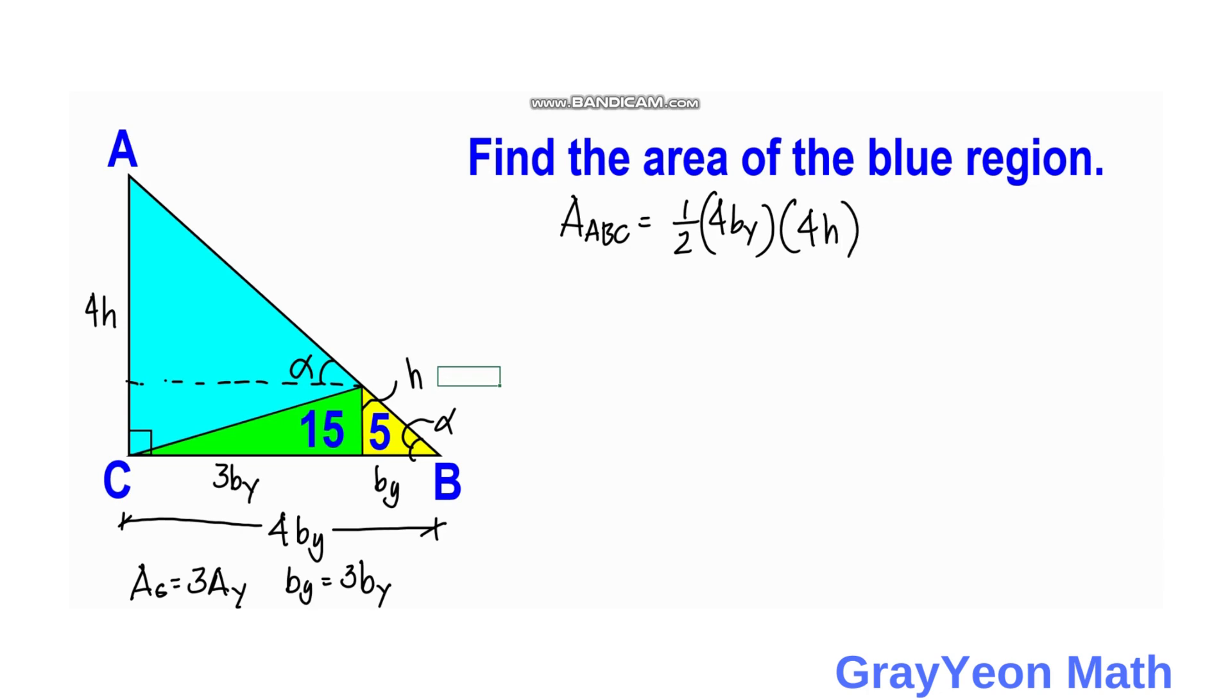And for the area of the yellow, we have one-half times the base which is by and the height which is h. If we divide this two equations, we cancel this and we cancel h, and by cancels out also, and we can say that area ABC is actually equal to 16 times area y.